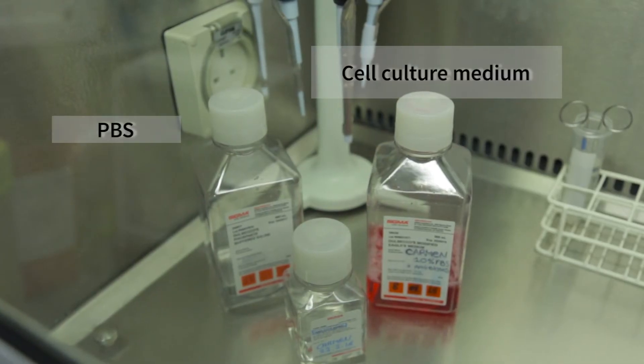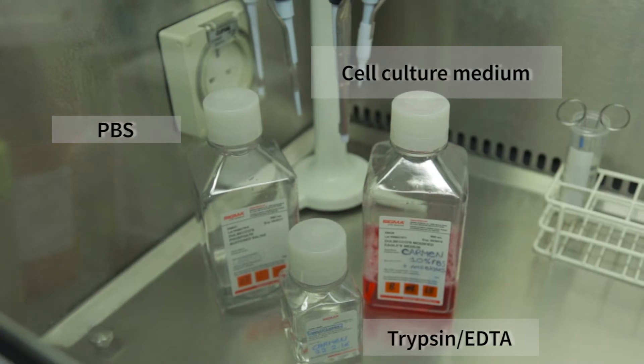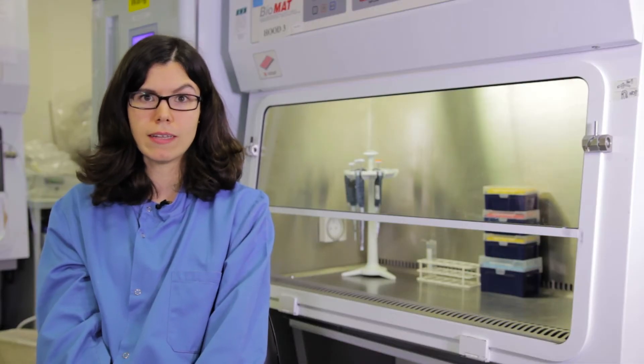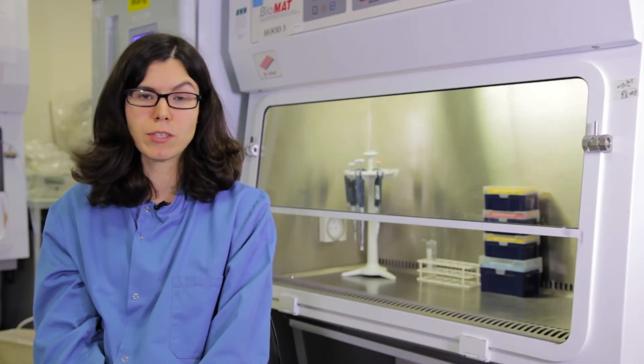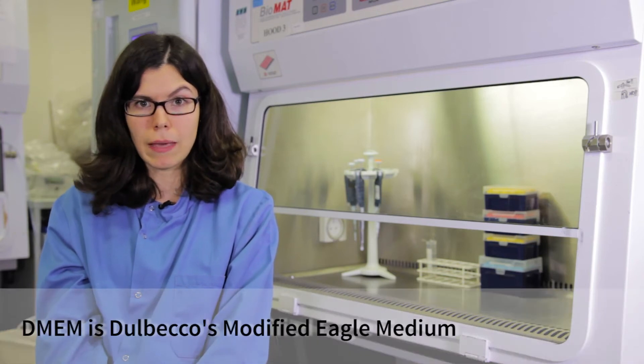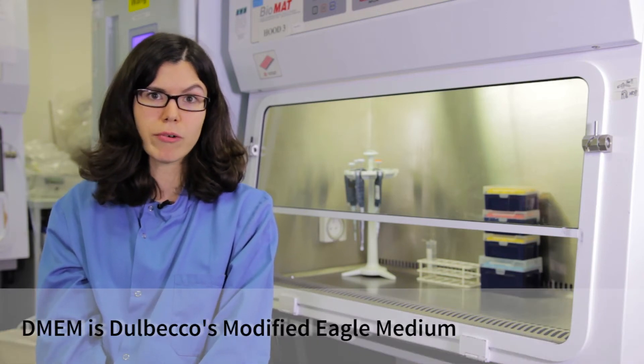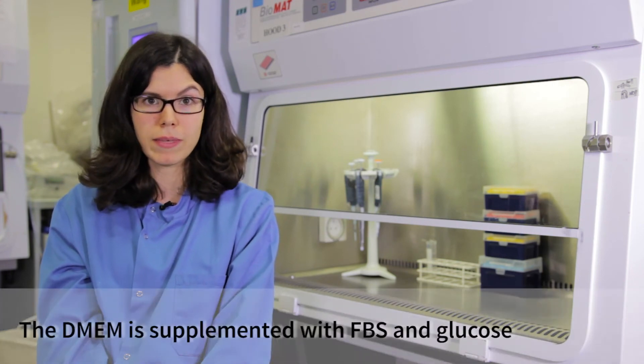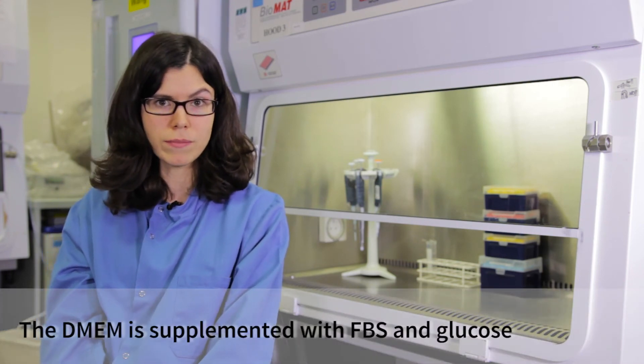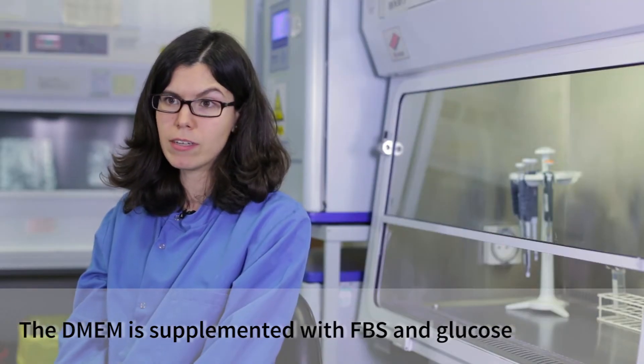Today, I will use medium, PBS and trypsin EDTA solution to subculture one cell line. There are different types of medium. I will use DMEM medium due to the special requirements of my cell line. It has been supplemented with FBS, fetal bovine serum, and it contains high levels of glucose.